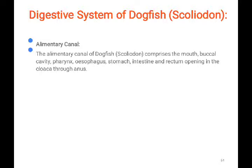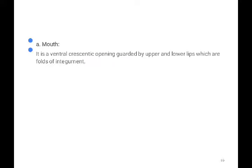When we talk about the mouth, it is ventral in position. In the case of the Osteichthyes, the mouth is present at the front, but in the case of the elasmobranchii — all the cartilaginous fish — the mouth is preferably present at the ventral side. This is a very classical example of the elasmobranch class that you should remember. The mouth opening is guarded by the upper and lower lips.